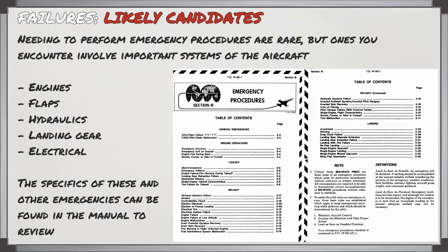Needing to perform any kind of emergency procedure is pretty rare, and the ones you're going to encounter will usually involve the important systems of the aircraft such as the engines, the flaps, the hydraulics, the landing gear, and the electrical system. In this video we're only going to look at engine failures and restarts. If you want to look at other emergencies you can check out the manual.